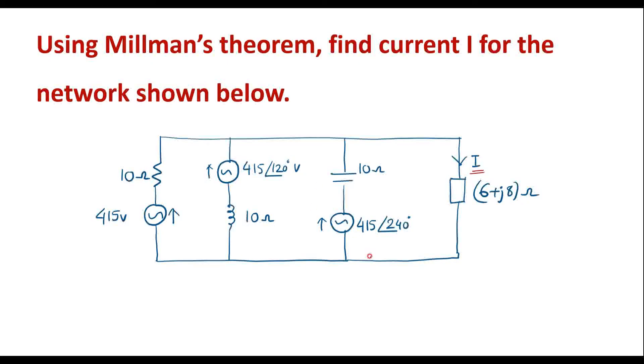So in Millman's theorem we supposed to calculate the Millman voltage Vm and the Millman's resistance Rm or Zm, then Vm and Rm should be connected in series. To that series combination we supposed to connect 6 plus J8 then we have to find current I.